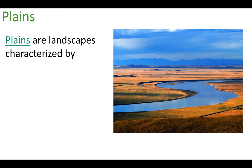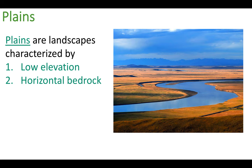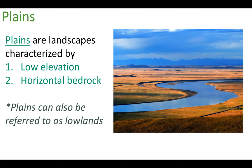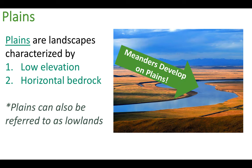Another type of landscape region in New York State are plains, which are simple to remember. Plains have low elevation and horizontal bedrock — completely flat land. Plains can also be referred to as lowlands, which makes sense since the land is low. Looking at this image of a plain, you can also see a meander — meanders develop on plains, as a reminder from last unit about specific stream structures.